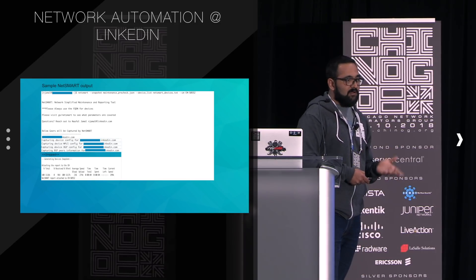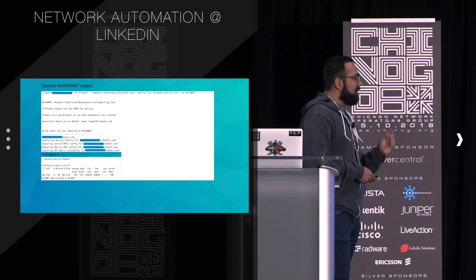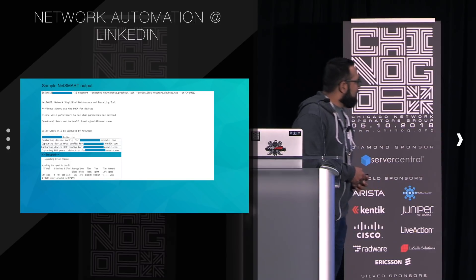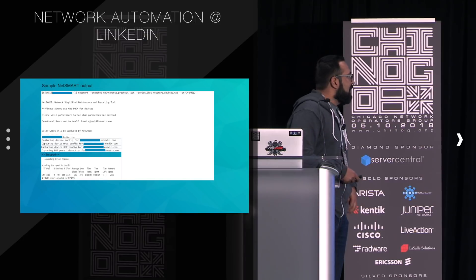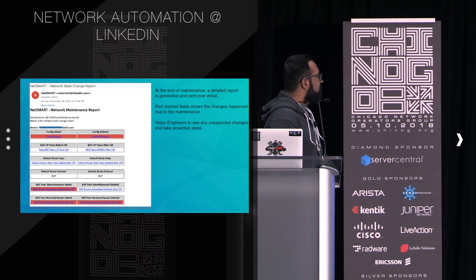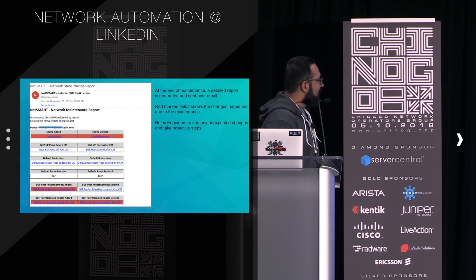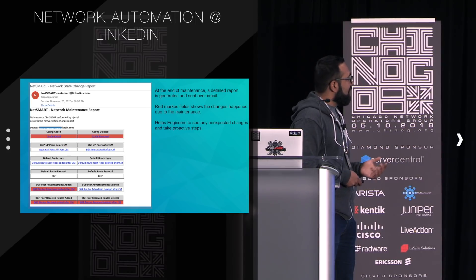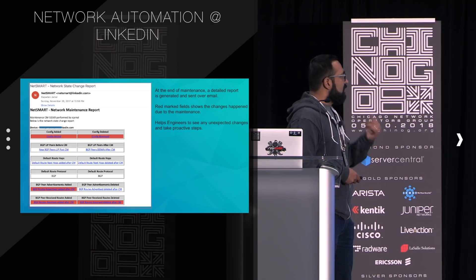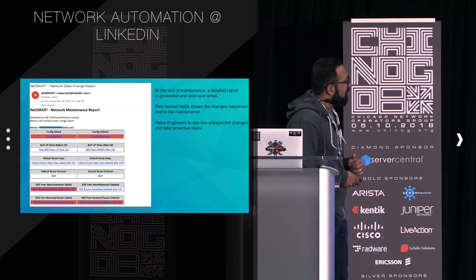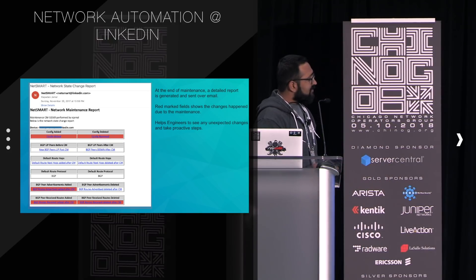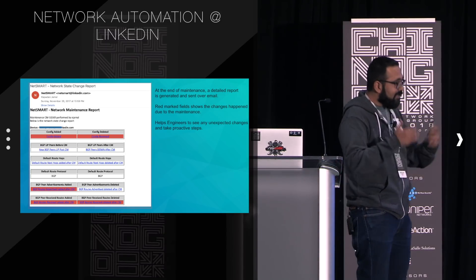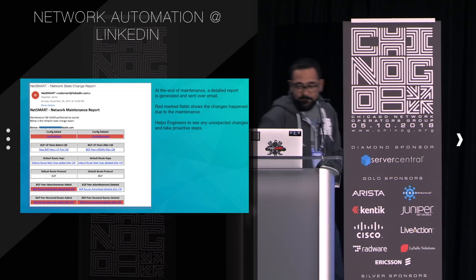There's a JSON compare function — JSON 1 is the file captured before maintenance and JSON 2 is the file created after. It returns the diff between them. The maintenance report highlights in red whatever changed. For example, 'config added' is a hyperlink showing what configs were added or removed. BGP peer advertisement changes are also flagged — if before maintenance you received ten routes from an uplink but after maintenance only five, that gets highlighted. The biggest advantage is you can see any unexpected changes and take proactive steps before they turn into an outage.